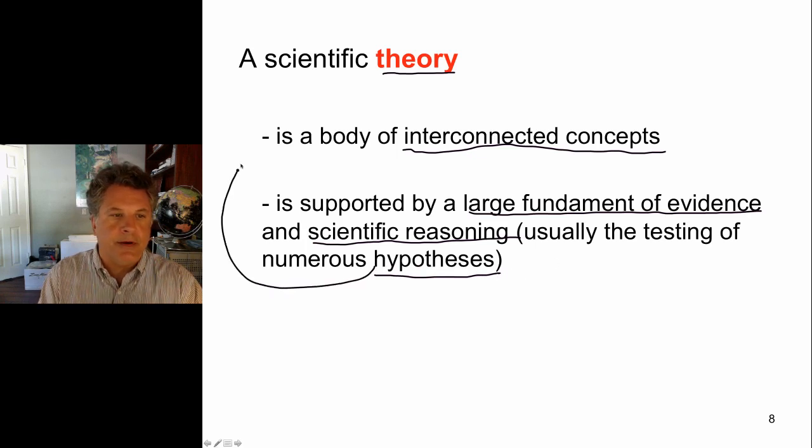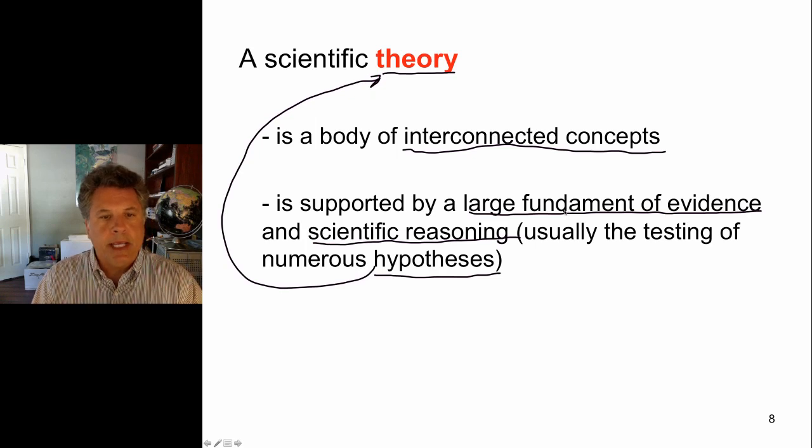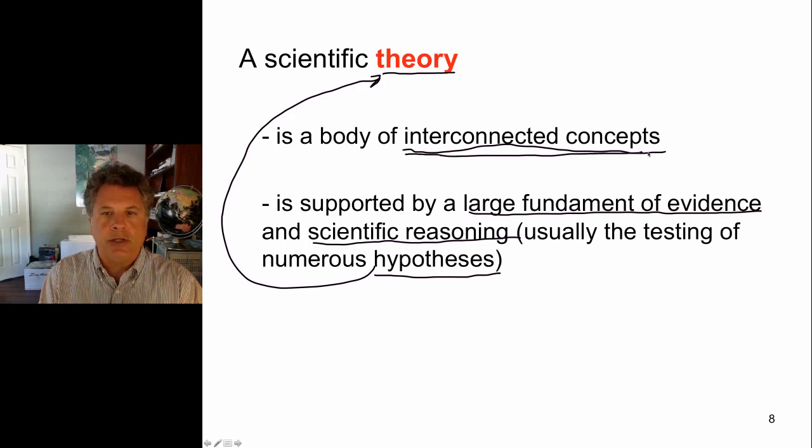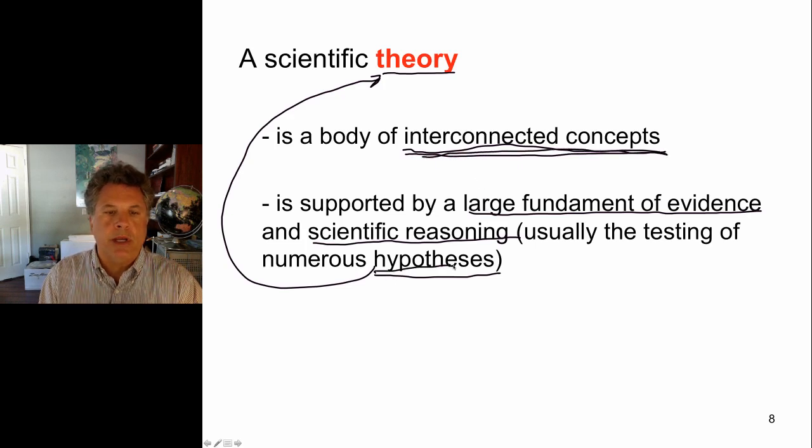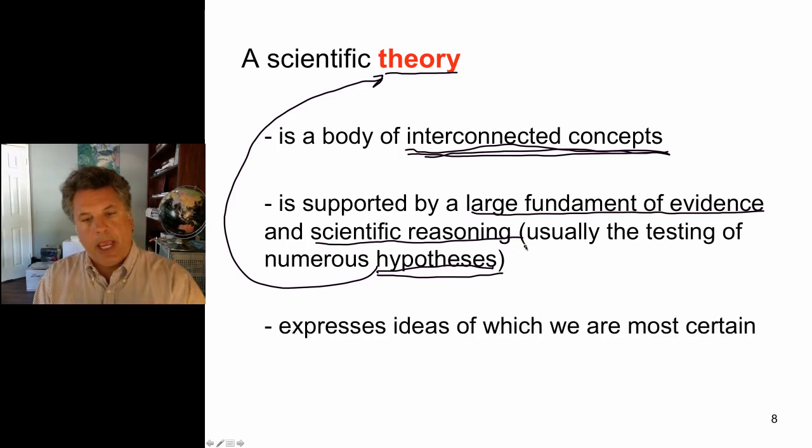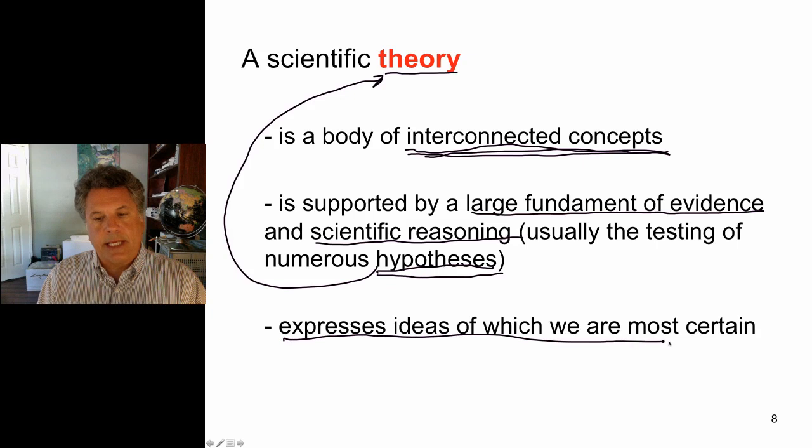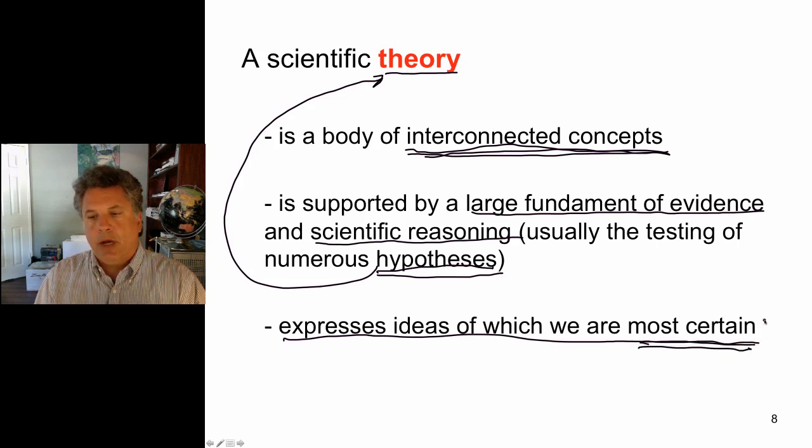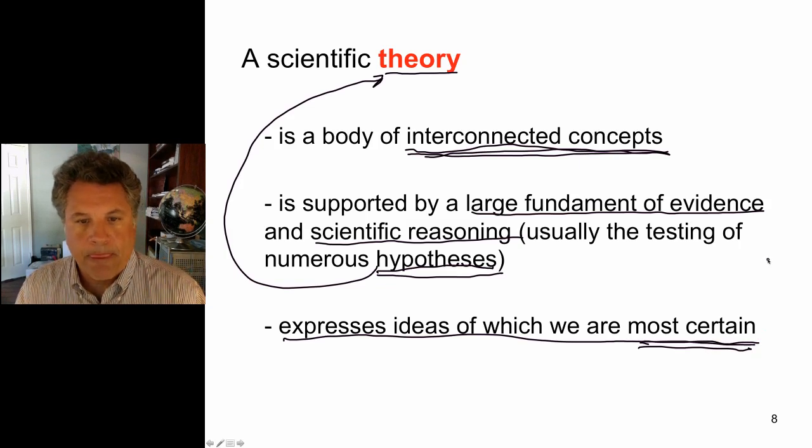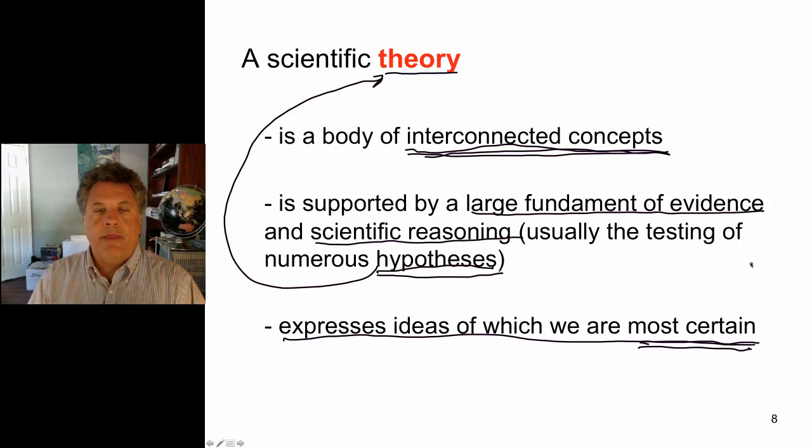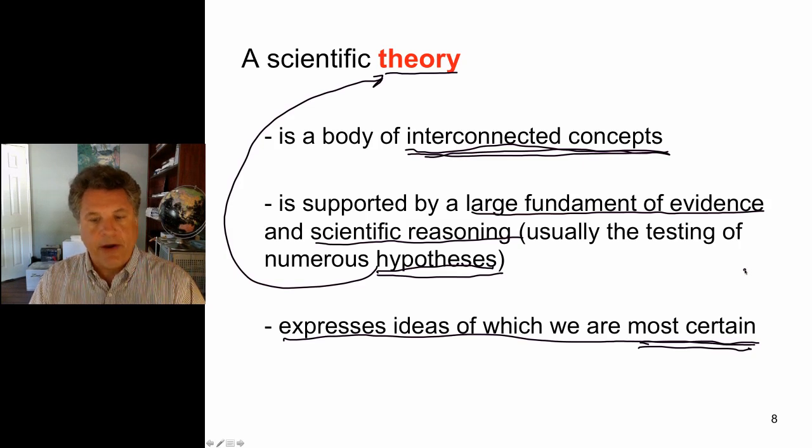And we can then say that a theory is an expression of idea of which we are most certain. So, we are fairly certain, based on theoretical work and by empirical work, that mass warps space. This comes out of Einstein's theories of relativity. And we are fairly certain of those ideas. They've been tested in a number of ways.